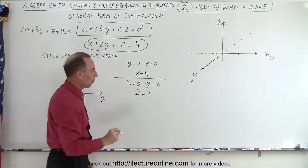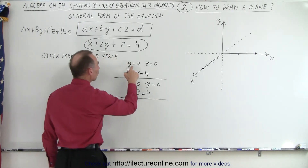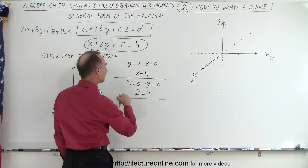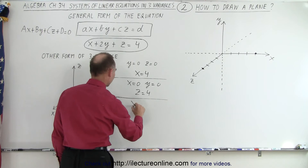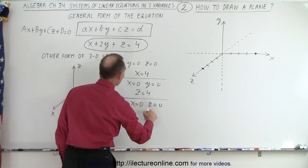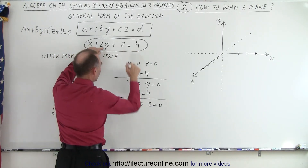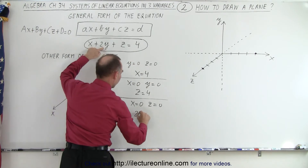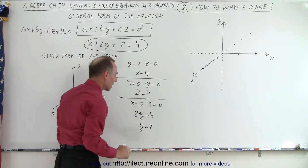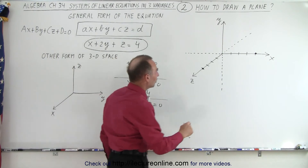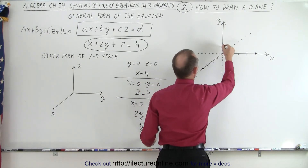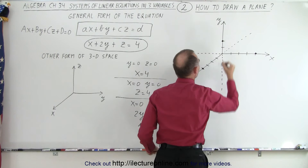We need one more point. Now we set x equals zero and z equals zero. When we do that, we get 2y equals four, which means y equals two. So when x and z are equal to zero, y equals two — one, two — that's this point right there on the y-axis.